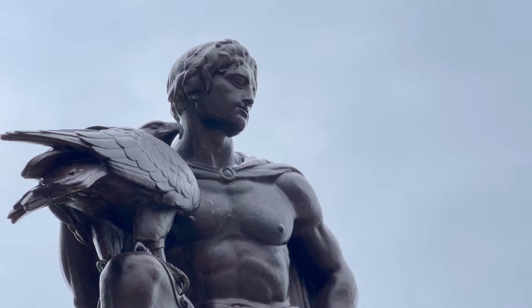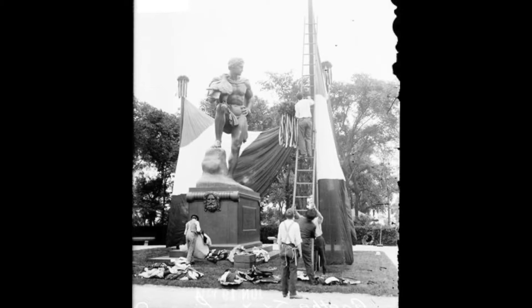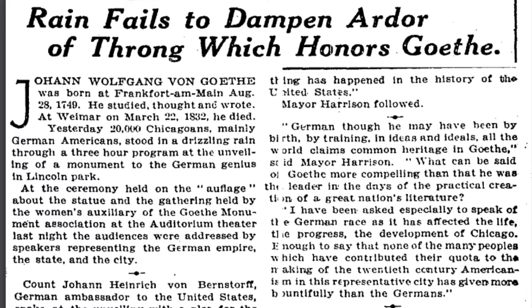Despite the rich symbolism of Hahn's statue, the design caused some controversy, with Harriet Monroe, a Chicago art critic, declaring the pose insecure and comparing the eagle to a decoy duck. This criticism stood in stark contrast to the response of Chicago's German community, who showed their support at the monument's unveiling on June 13, 1914. Over 20,000 people attended, and several speeches were given, including one by Johann Heinrich von Bernstorff, the German ambassador to the United States,